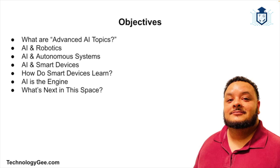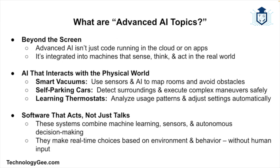By the end of this video, you'll understand how AI is used in robotics, what makes a system autonomous, and how smart devices use AI to learn, adapt, and assist. Most importantly, you'll be able to see how all of these parts fit together in your everyday life. Now let's talk about advanced AI topics.